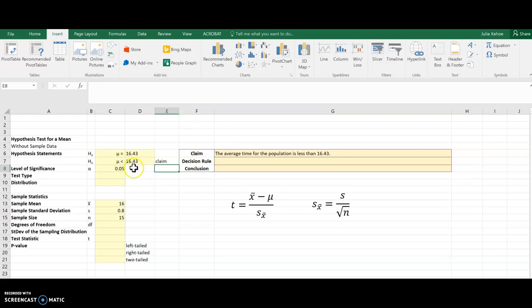Looking at that alternative hypothesis, I've got mu is less than, so that is going to be a left-tailed test. You can see below, we're going to calculate left, right, and two-tailed. And because this is a mean and all I have is a sample standard deviation, this is going to require me to use a t distribution.